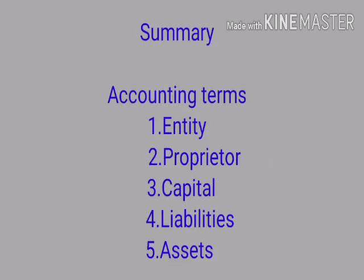So it's time to sum up the session. Today we have learned some new accounting terms: entity means business organization; proprietor means the owner of a business organization; capital means the money invested by the proprietor in a business; liabilities are the obligations or debts of an entity; and assets means all the valuable properties of the business which are used to run the business smoothly.